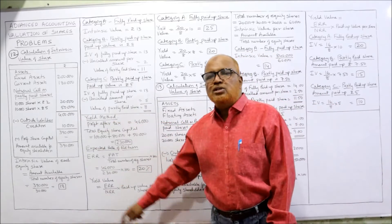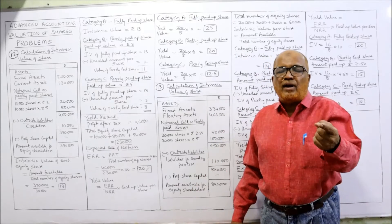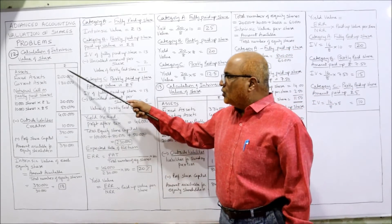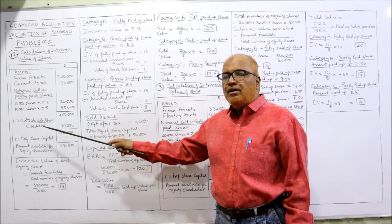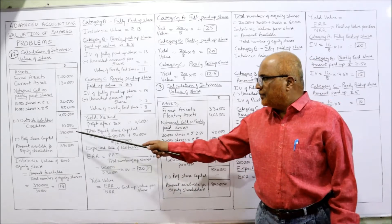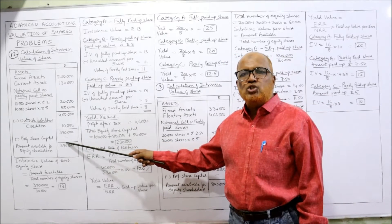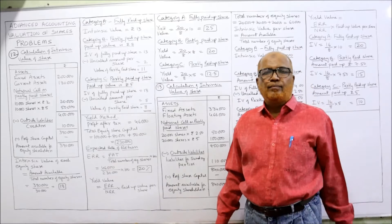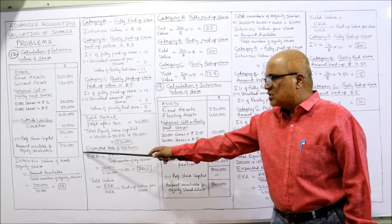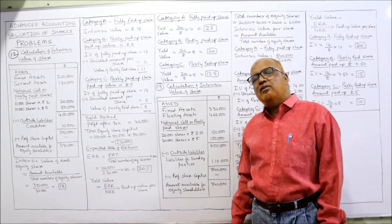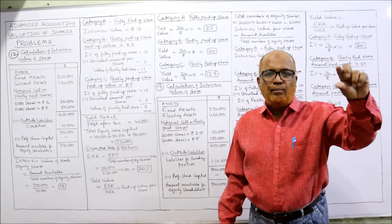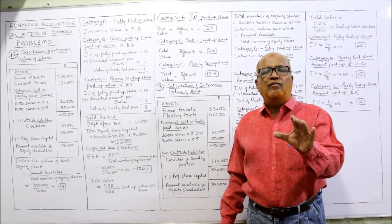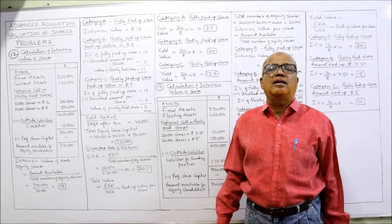Second category: 10,000 shares on which 5 rupees are called and paid up, remaining 5 rupees now called notionally — 50,000. Total assets: 4 lakh. Outside liabilities — trade payable — 10,000. Net assets: 3 lakh 90,000. There is no preference share capital, so the amount available for equity shareholders is 3 lakh 90,000. Now, intrinsic value equals amount available divided by total number of equity shares: 10,000 + 10,000 + 10,000 = 30,000 shares.